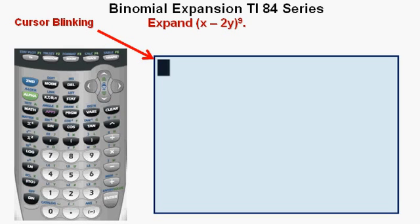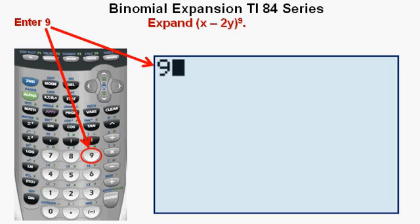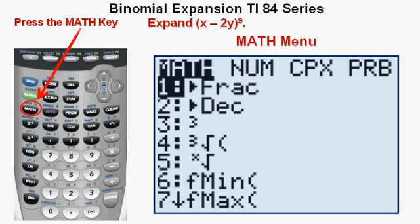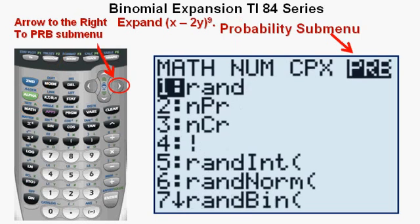We will expand the expression quantity x minus 2y to the ninth power. We see the cursor blinking when we turn on the calculator. Enter 9 for the power of the binomial expansion. Start by pressing the math key on the left side of the keypad. We see the math menu.